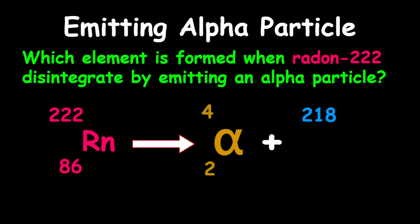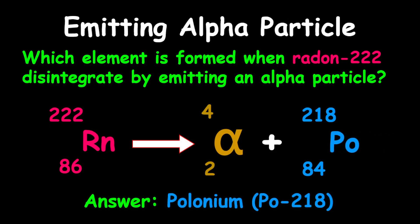To determine the proton number, we're going to subtract two from 86. Therefore, the proton number is 84. By looking at the periodic table, you realize that this element is polonium. Therefore, the answer is polonium-218.